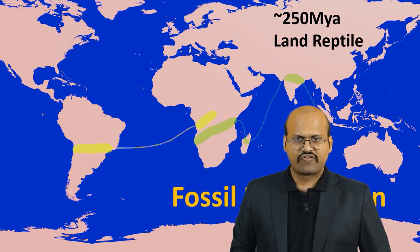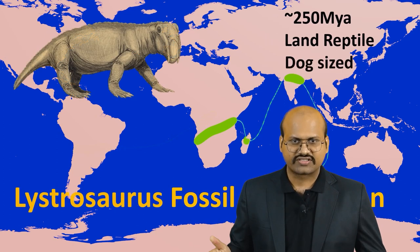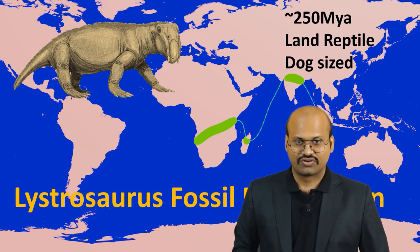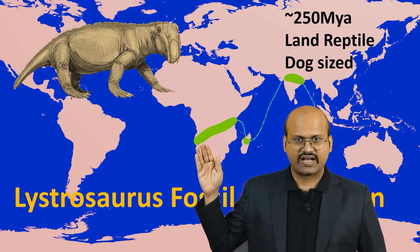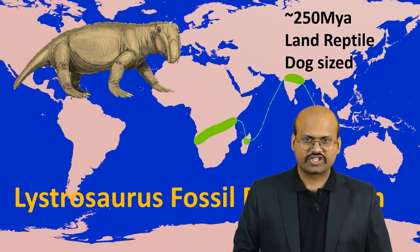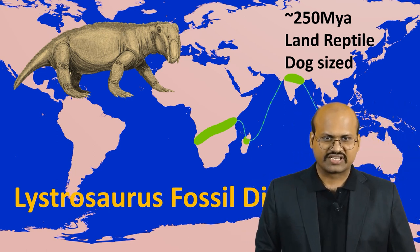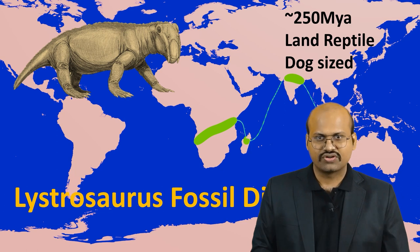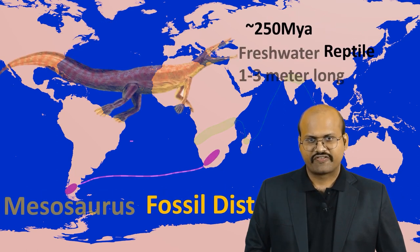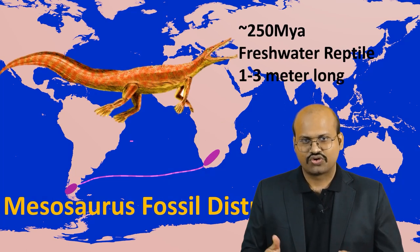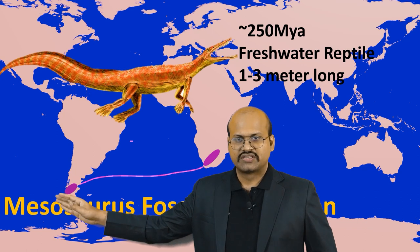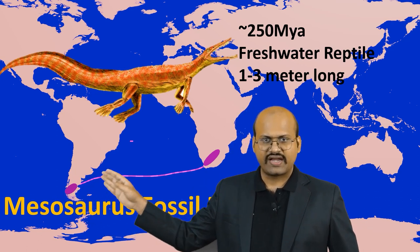Similarly, fossils of Lystrosaurus, a dog-sized reptile from around 250 million years ago, were found in Africa, India and Antarctica. It was again not possible for Lystrosaurus to cross such a vast ocean. Fossils of Mesosaurus, a freshwater reptile which lived around 250 million years ago, were found in the southern part of South America and Africa.